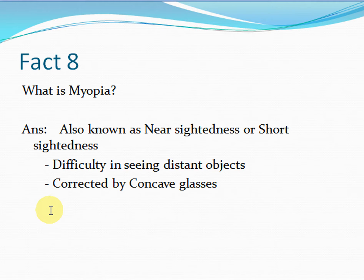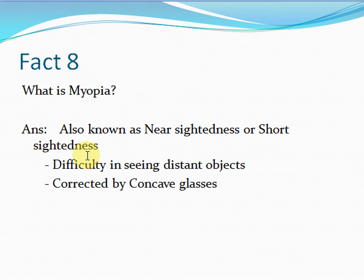Next question: what is hypermetropia? It is also known as farsightedness, and the person affected with hypermetropia has difficulty in seeing near objects. It is corrected by prescribing convex glasses to the person.